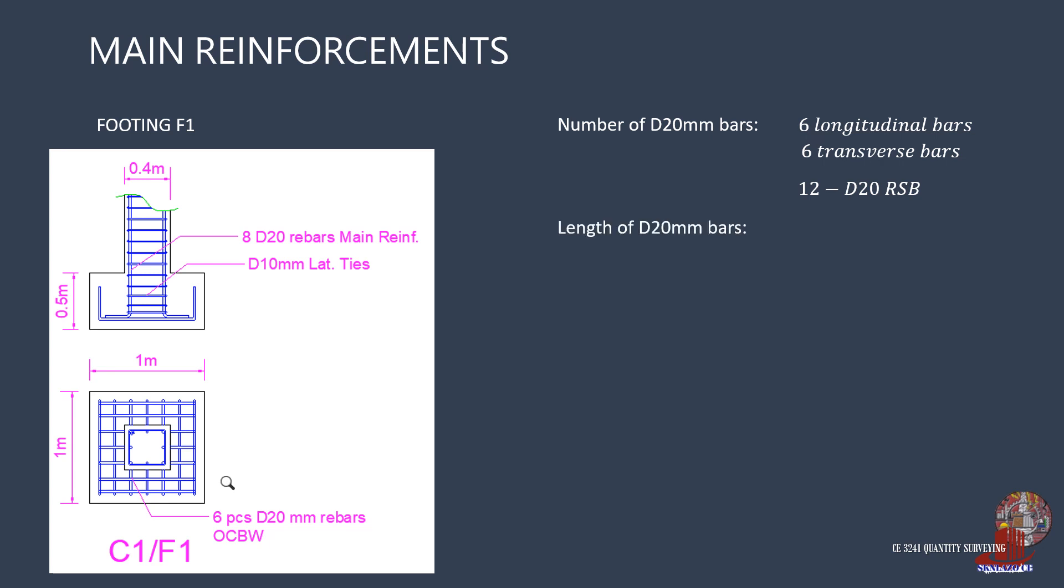The length of the bars is computed as the concrete dimension of the footing less the clear concrete covers on both edges, plus the bends on both ends of the bar. Because footings are exposed in constant moisture from the grade, the clear concrete cover adopted is 75mm or 3 inches. The bend is also computed as 12 times the bar diameter.